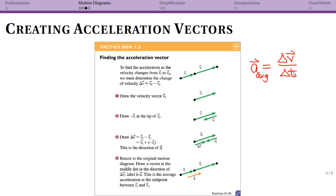For average velocity we said it was the change in position — the displacement — divided by our time interval, and again for motion diagrams our time intervals are always the same. So all we need to do to create our acceleration vector is to find the change in velocity vector, and then create our acceleration vector in the same direction and same length.